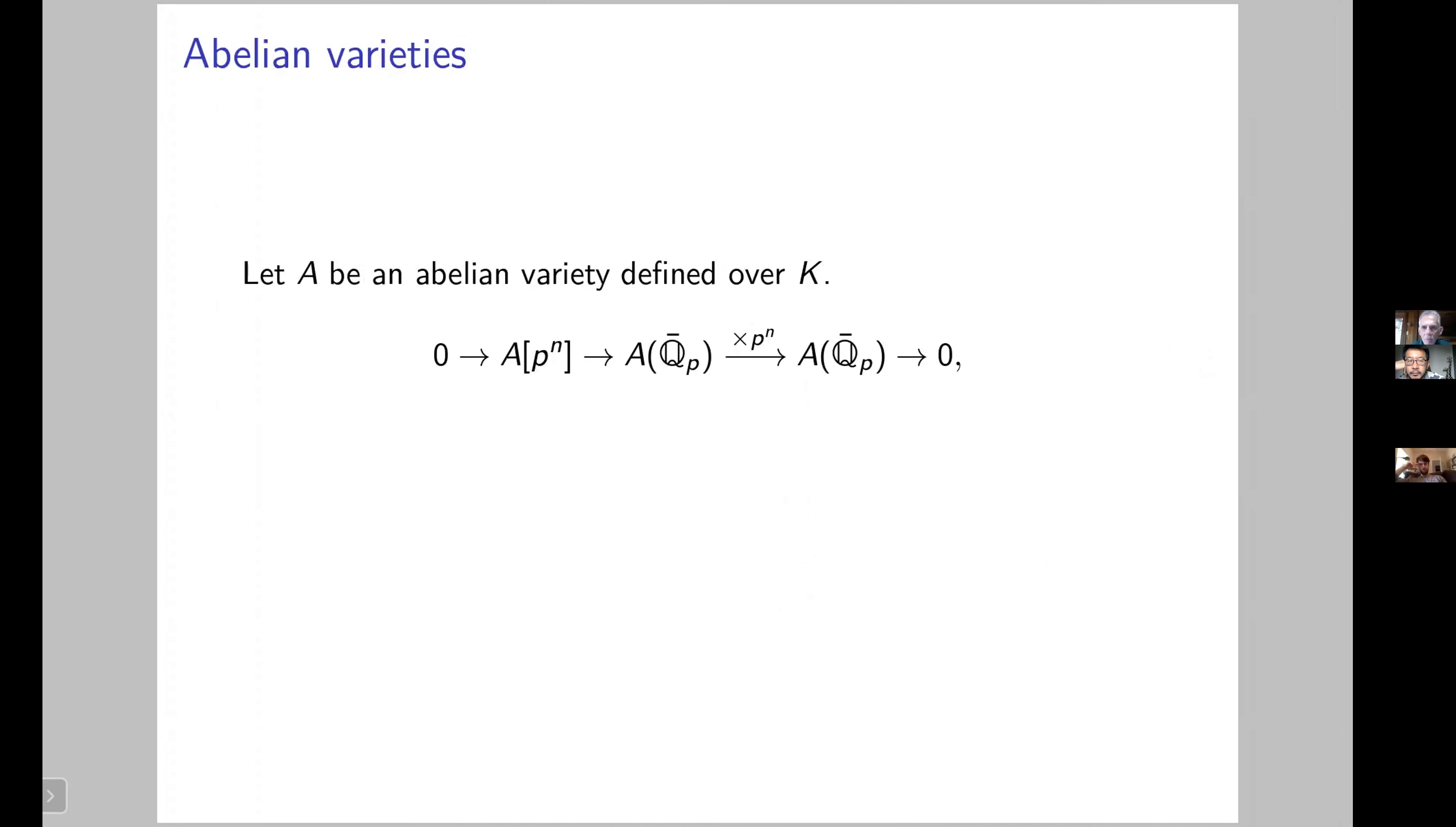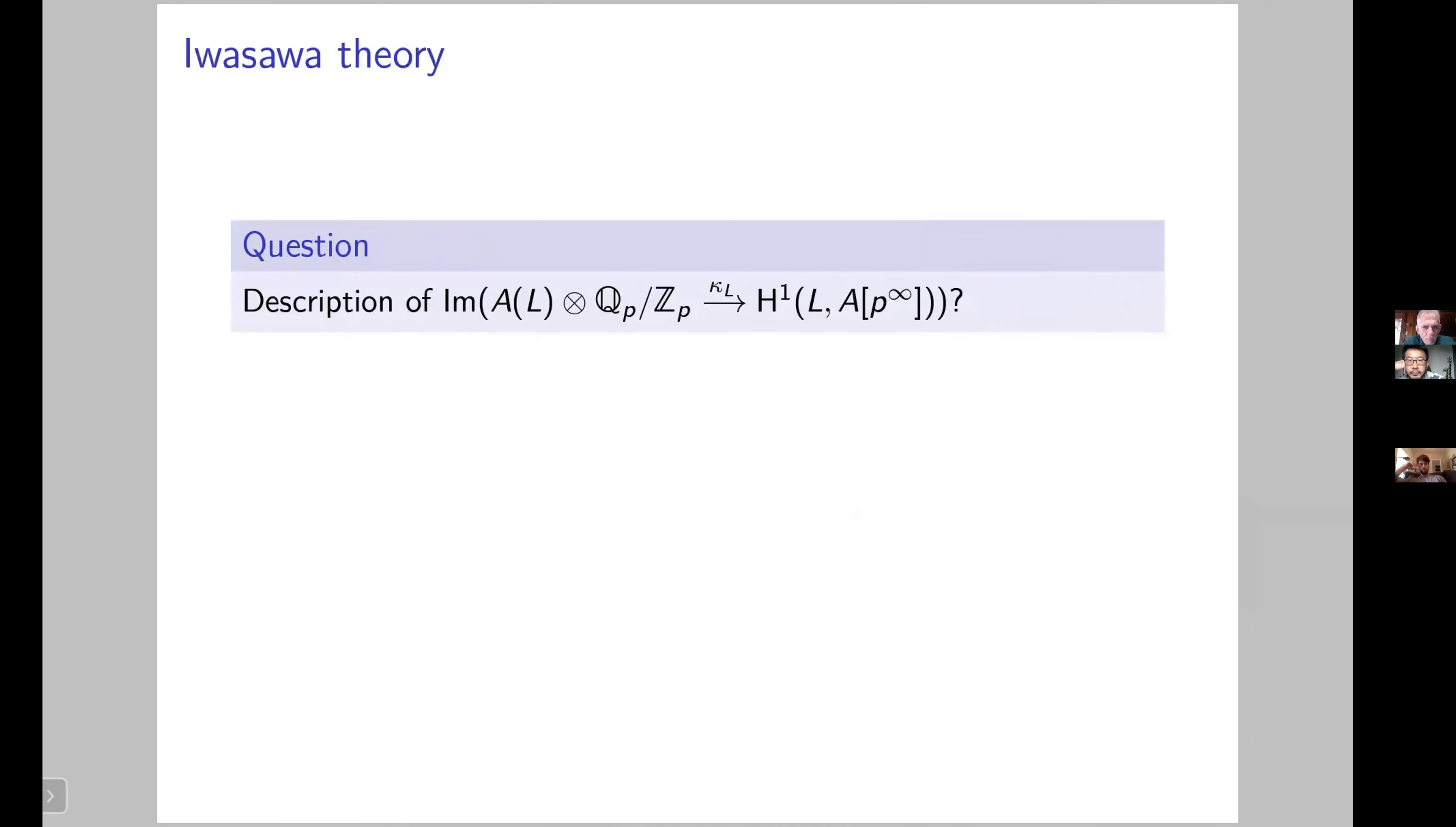Let A be an Abelian variety defined over a finite extension of Q_p. Then we can consider the short exact sequence of multiplication by p^N for any N. If we take the Galois invariant of this exact sequence and take the limit over N, we get what's called a Kummer map, which sends the L rational points of the Abelian variety tensor by Q_p over Z_p inside the first Galois cohomology group of G_L acting on the p-power torsion points. And now a question that arises: can we have a nice description of this image of this Kummer map?